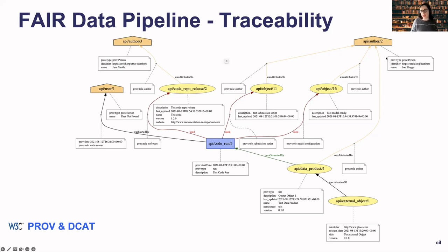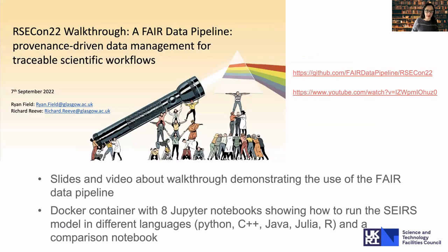Once you run a model and have information about the different objects, it is possible to produce a diagram like this example, where each entity has its persistent identifier — for instance, a person would have an ORCID ID — and you can track how specific code was run, producing different data products. This is the representation based on PROV and DCAT that I mentioned. At the RSC conference last year there was a walkthrough, and I've included a link to the video as well as the GitHub repository containing all the code.